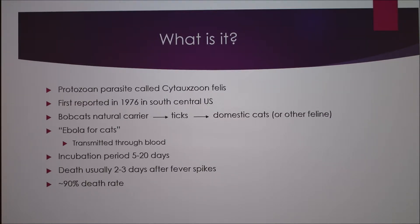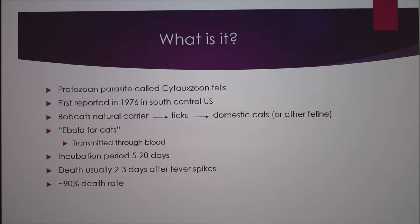It takes about 5 to 20 days for the parasite to actually get through the body and cause problems. After the fever actually spikes, the cats usually die within about 2 or 3 days. It's a really high death rate just because there's no vaccine for it.